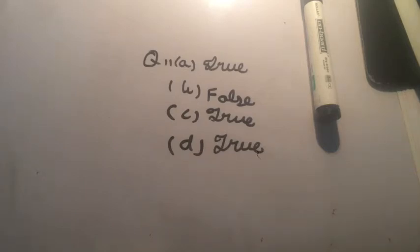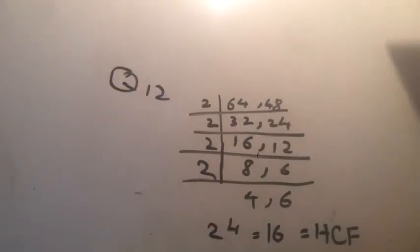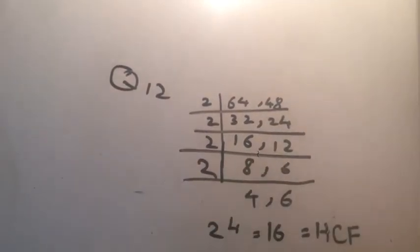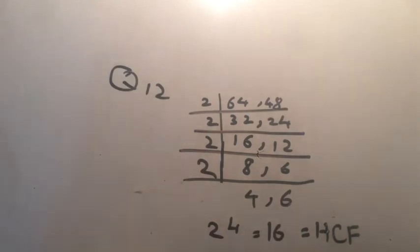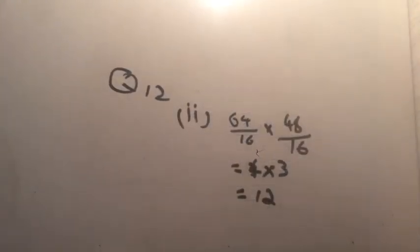Question 12: Kate wishes to cut some squares from a cardboard sheet with length 64 centimeters and breadth 48 centimeters. She likes the squares to be as big as possible and doesn't want any leftover. Part 1: What is the length of each square? To find the length, we take the HCF of 64 centimeters and 48 centimeters. The HCF is 2 to the power 4, which equals 16. So the length of each square is 16 centimeters.